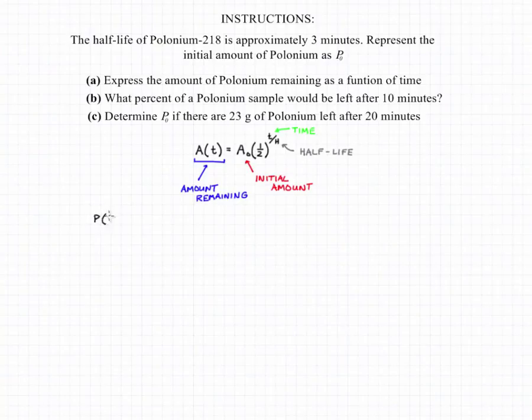So in order to answer part (a) to express the amount of polonium remaining as a function of time, we can say P(t) equals P₀ times one-half, and now our half-life is three minutes, so that's going to be raised to the t over three. We need to remember that our t in this case has to be given to us in minutes because that's what we used for our half-life, and that would be the answer to part (a).